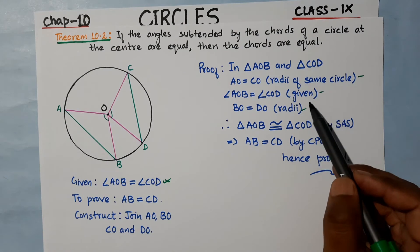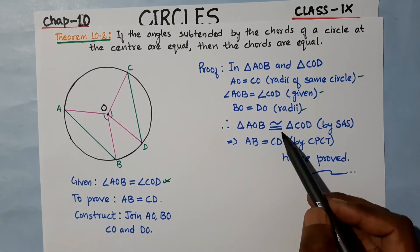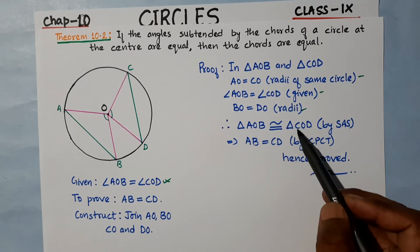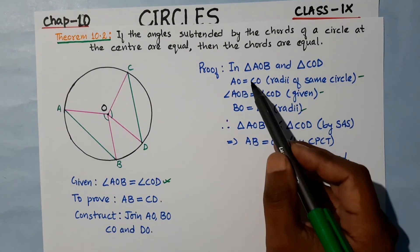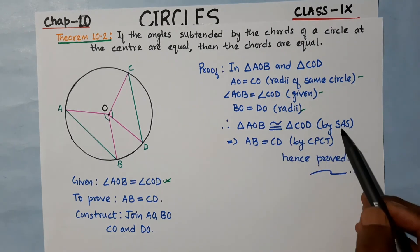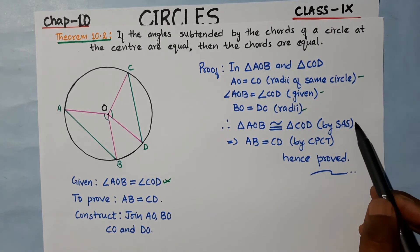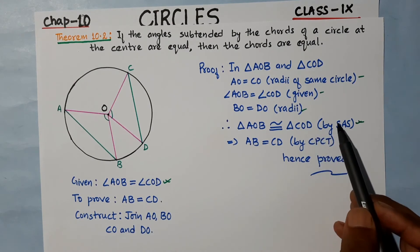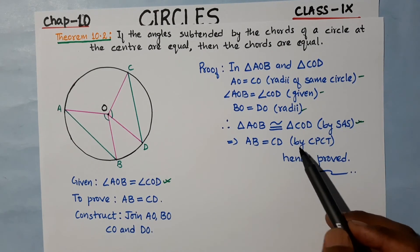Therefore triangle AOB is congruent to triangle COD by Side-Angle-Side, that is SAS. Once the triangles are congruent, the corresponding parts are equal.